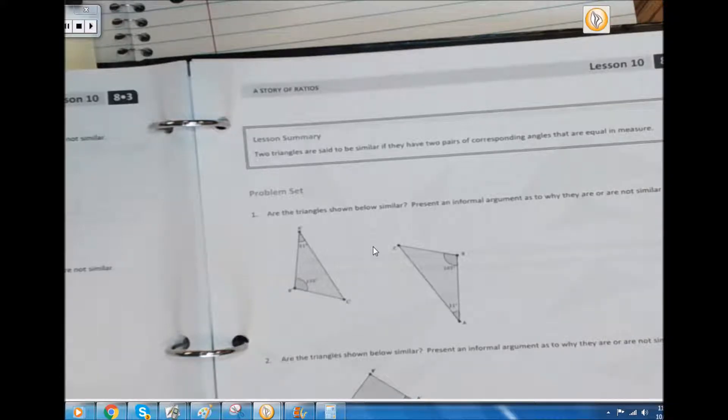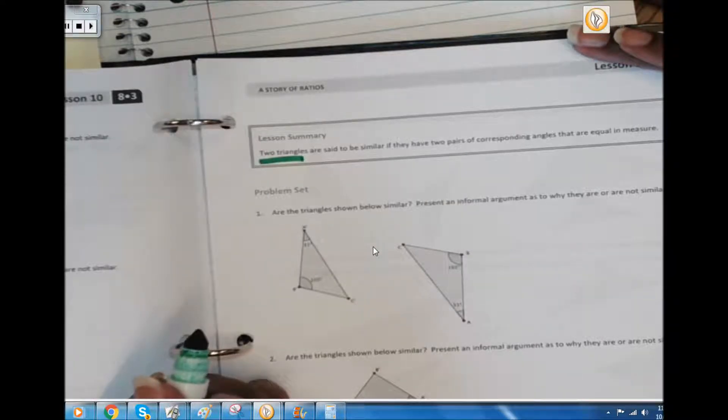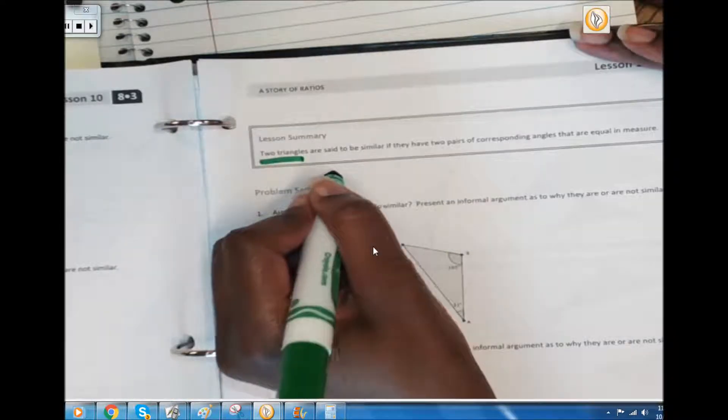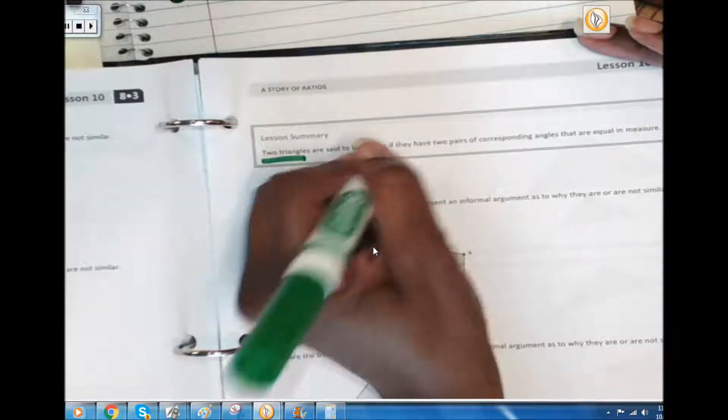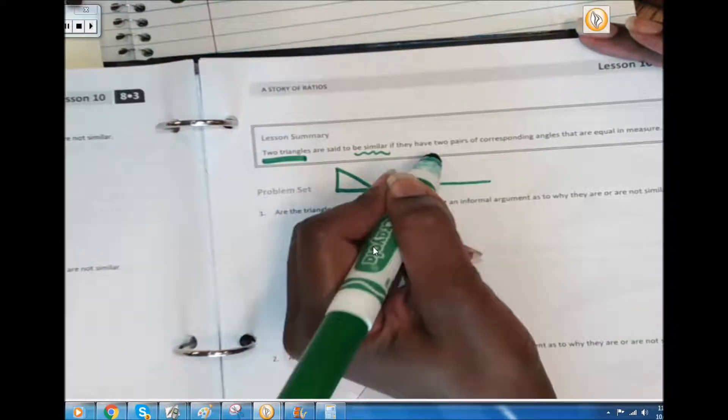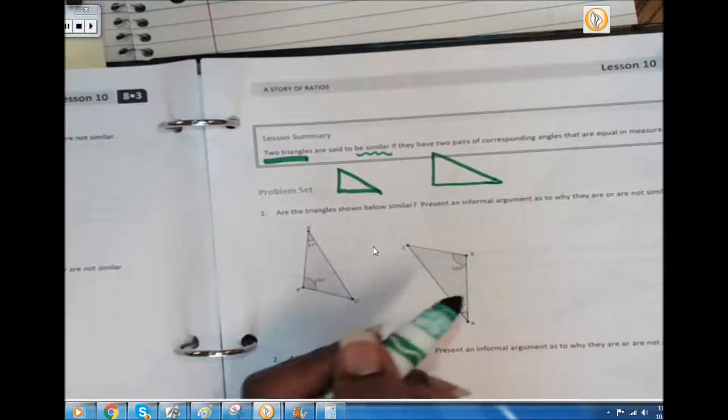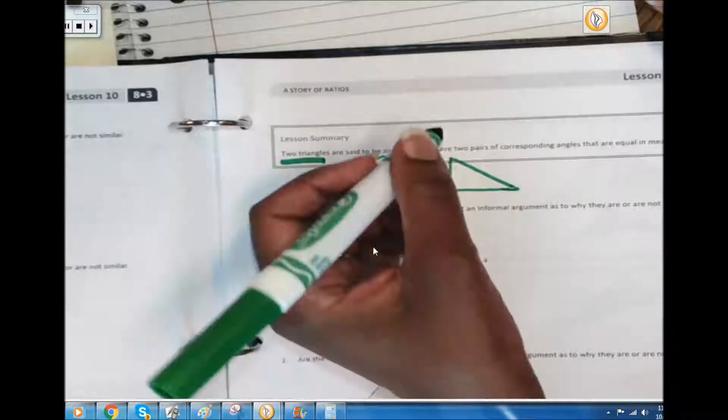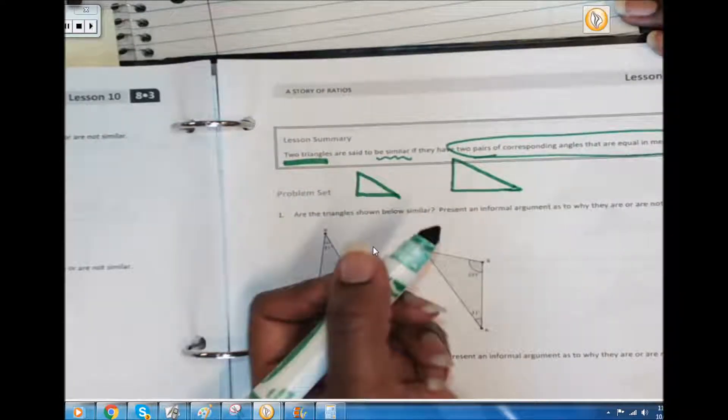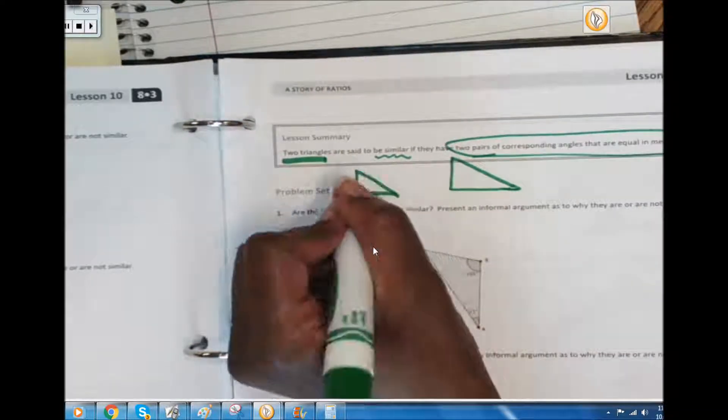So what I'm going to do is break this down for you. First of all, underline two triangles. Now I want you to draw two right triangles right under there and we want to talk about them being similar, so draw them two different sizes but the same shape. Now we have two triangles that are said to be similar if they have two pairs of corresponding angles that are equal in measure. Circle all of that right there.